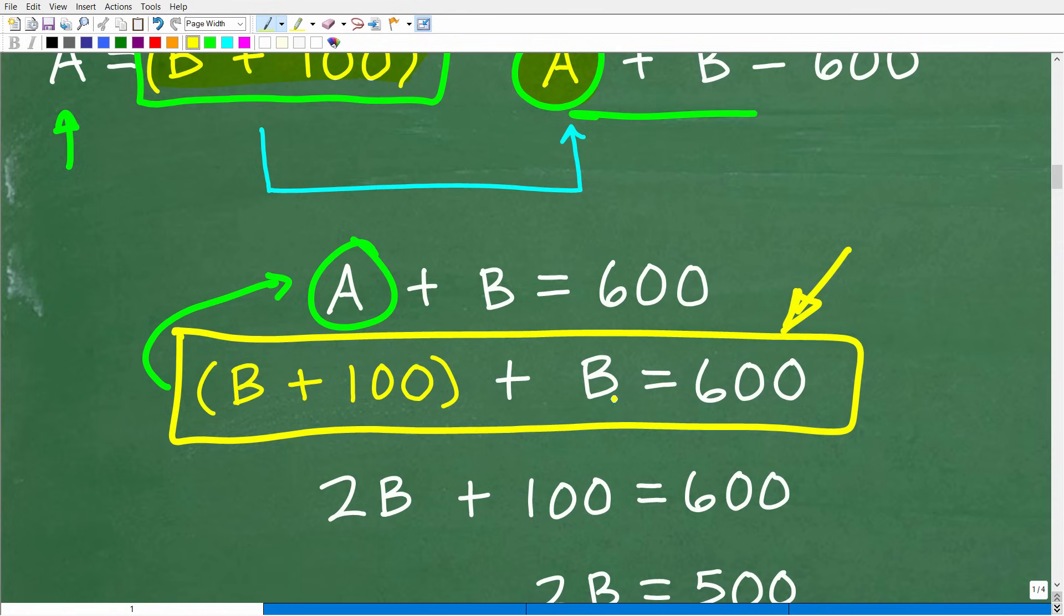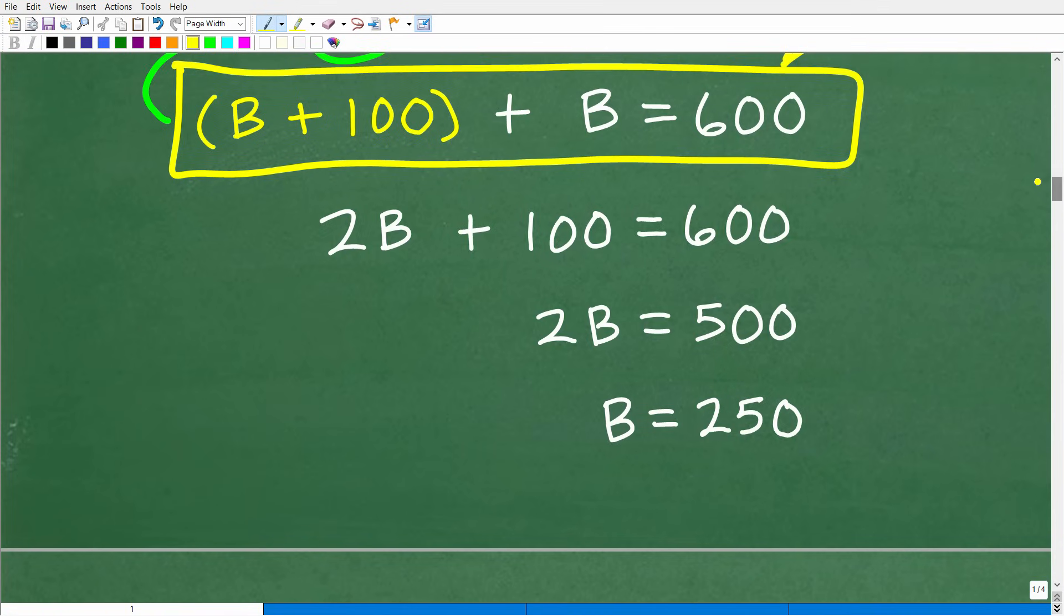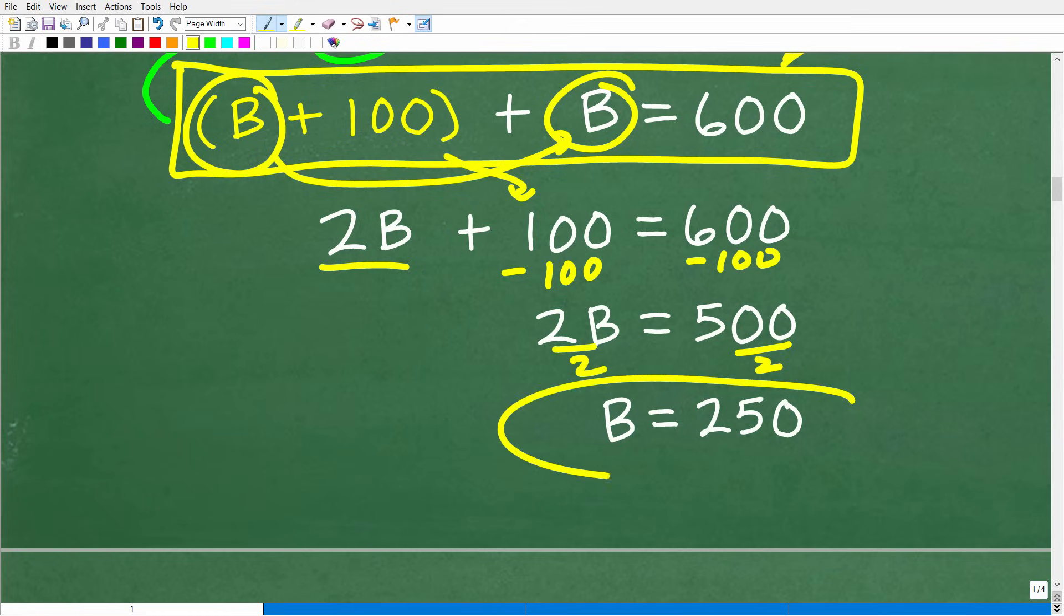So here we have A plus B is equal to 600. We're going to substitute this expression B plus 100 for this A. Now doing that gives us one equation in one variable. This is illustration of the substitution method. And now we can just solve for B. So we have B plus 100 plus B is equal to 600. So that's going to be two B plus 100 is equal to 600. Subtract 100 from both sides. Two B is equal to 500. Divide both sides by two. And we get B is equal to 250.